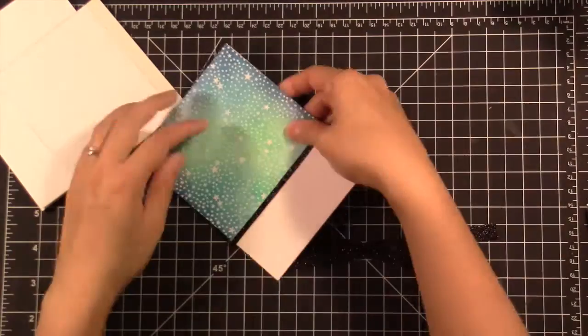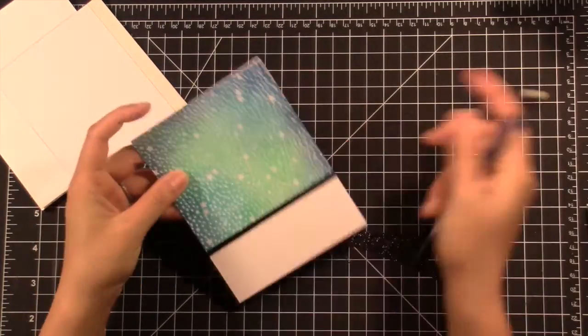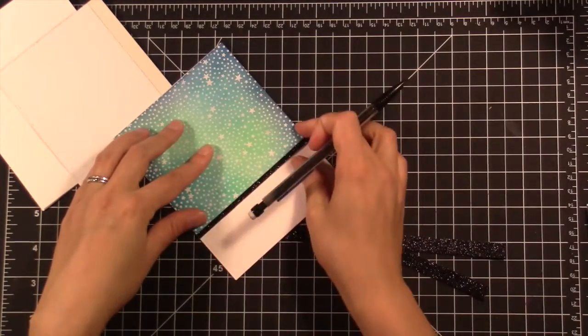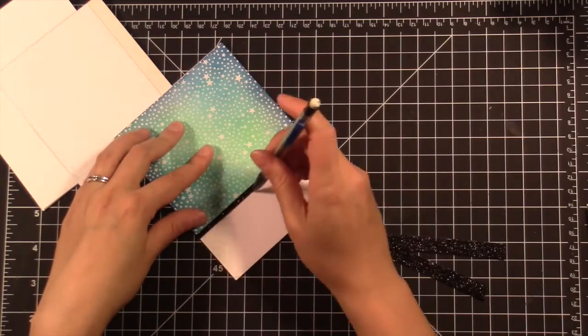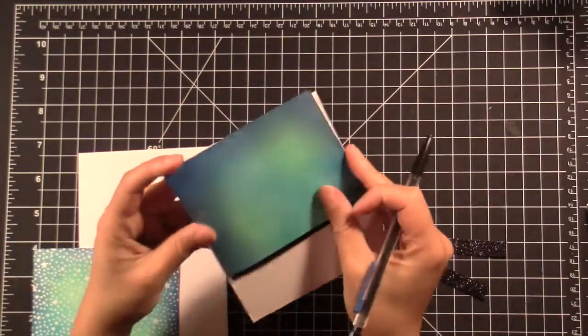So once I've laid them down, I'm going to go ahead and just take a pencil and just mark up under this panel so that I know exactly where my sentiment needs to be stamped so that it doesn't get lost under this panel once we attach it. So I measure that out for both of them.